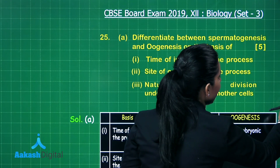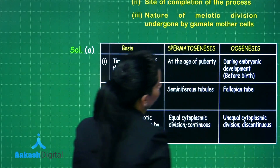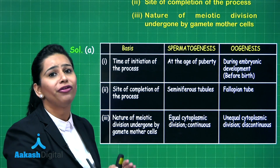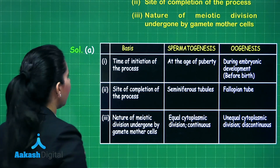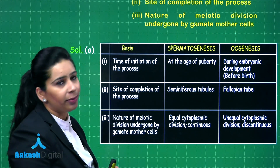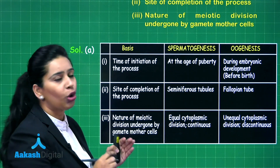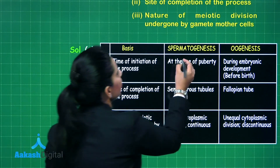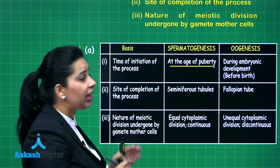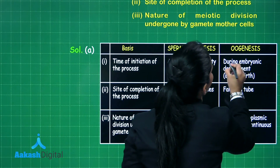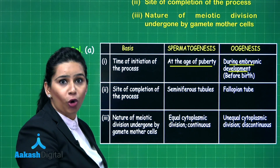Spermatogenesis and oogenesis are the processes of gamete formation in males and females respectively. The first point of comparison is time of initiation of the process. In males, spermatogenesis starts at the age of puberty, while in females it starts during embryonic development — it starts before birth.